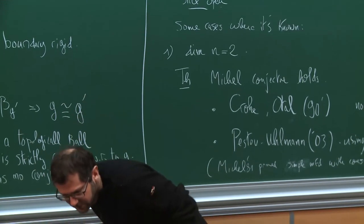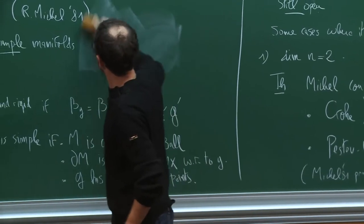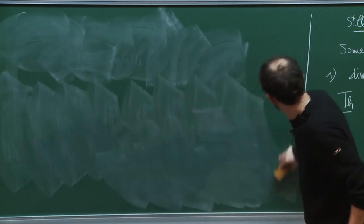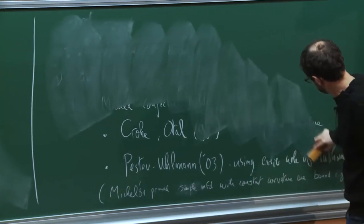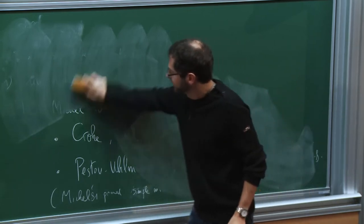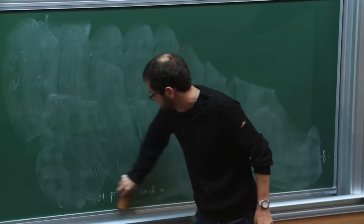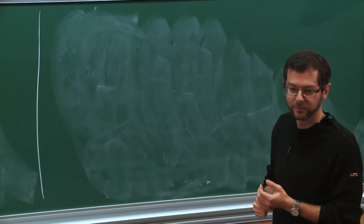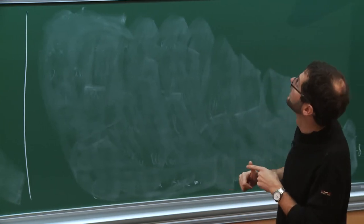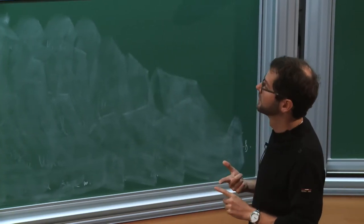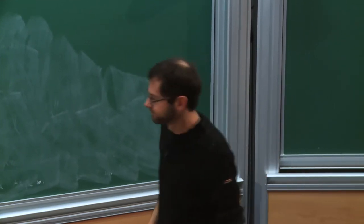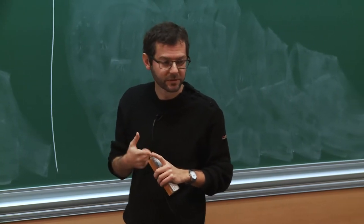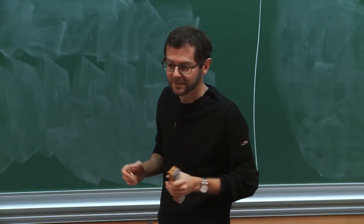The two results I will consider are not in the simple manifold setting but in a more general class. If you want to go further than simple manifolds, there are three conditions to remove: the convexity of the boundary, the no-conjugate-point condition, and possibly the topology. The cases we consider would be removing the convex boundary condition and, in some results, removing the topology condition. But the no-conjugate-point condition we are so far not able to remove.